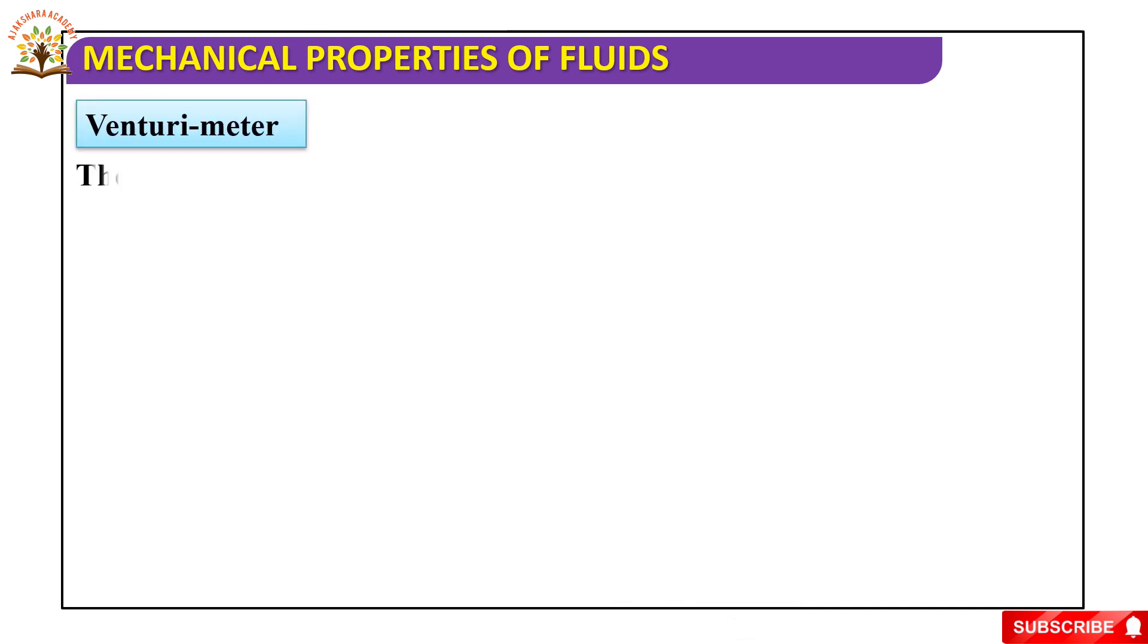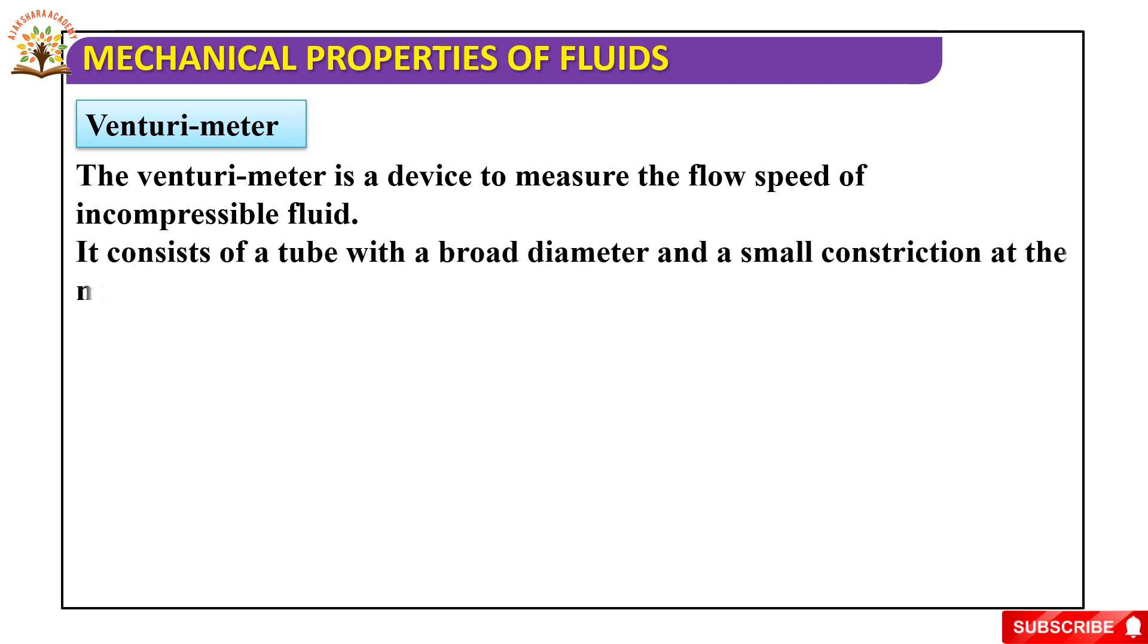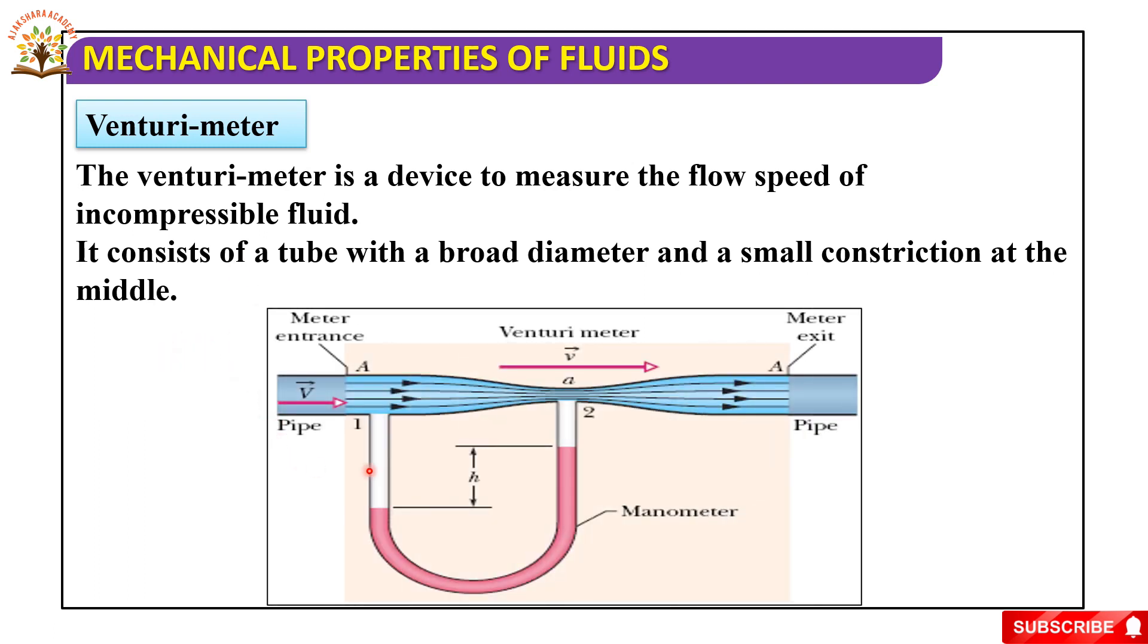Now, we will discuss venturimeter. The venturimeter is a device to measure the flow speed of incompressible fluid. It consists of a tube with a broad diameter and a small constriction at the middle. This is the picture of venturimeter.